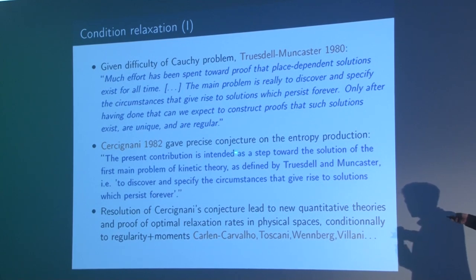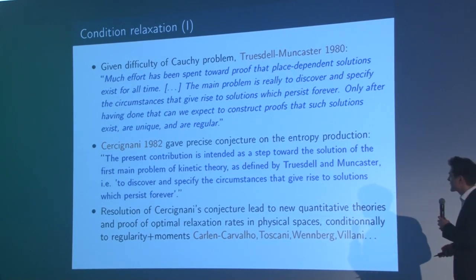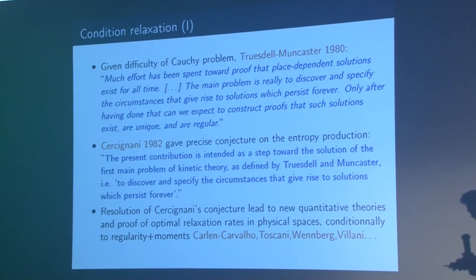Truesdell and Muncaster in 1980 remarked: stop obsessing over the Cauchy problem — try to understand how the formula is nice, discover the circumstances that give rise to solutions which persist forever, and only after that construct solutions. I'm not fully convinced by the last sentence, but it is good advice: we should try to do something meaningful without waiting for the Cauchy problem to be solved. Cercignani, soon after, formulated a precise conjecture on entropy production relating it to the relative entropy, which was the beginning of a long series of beautiful works by Carlen, Carvalho, Toscani, Wennberg, and Villani.